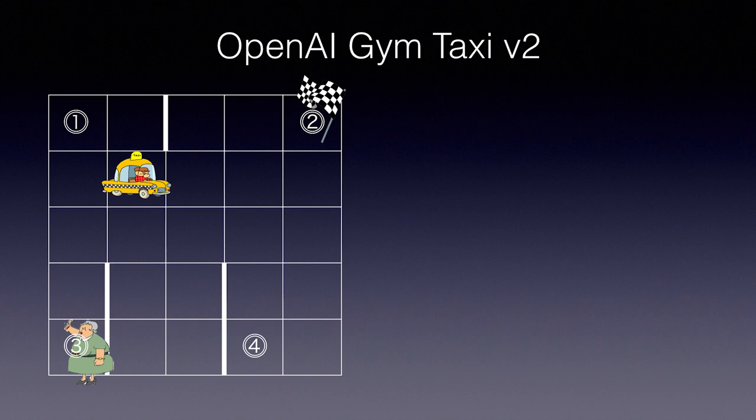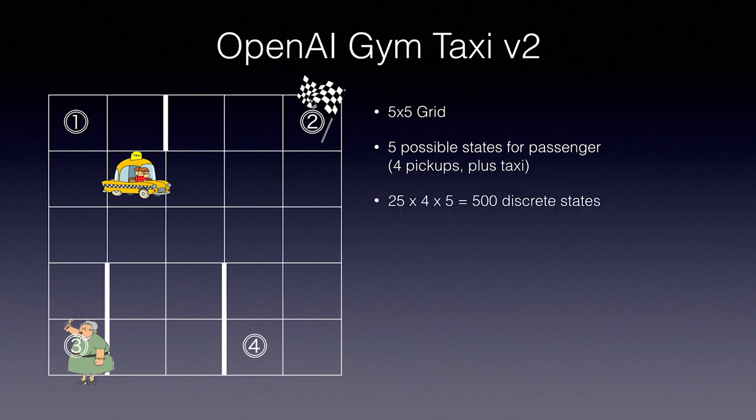Let's take a look at the taxi environment. We have a 5x5 grid. There are barriers in various places which must be driven around. There are four locations near the corners from which the pick up and drop off locations will be selected randomly. There are five possible states the passenger can be in at any given time: at any one of the four possible pick ups or in the taxi. So we take 25 squares times four possible pick up locations times five passenger states and that gives us 500 possible discrete states that our game could be in at any given time.